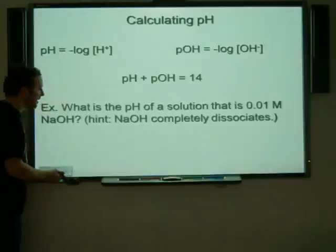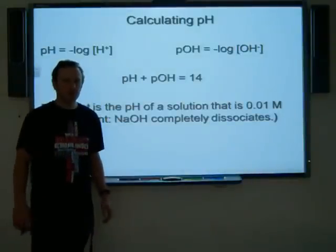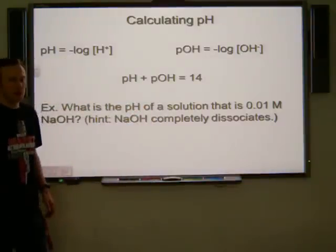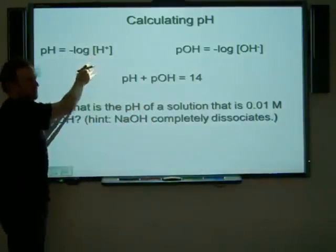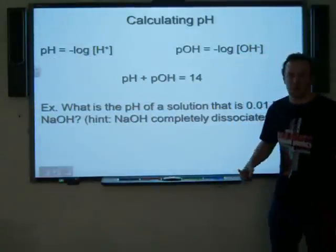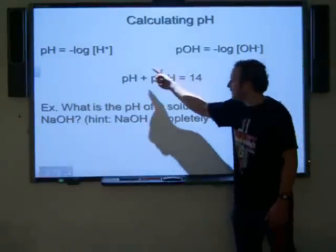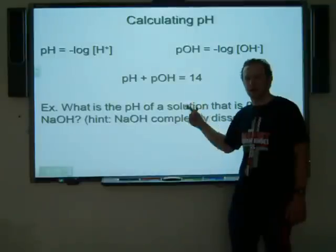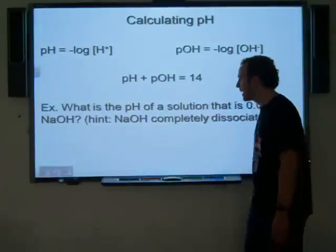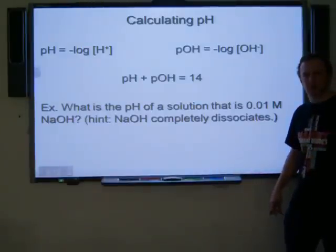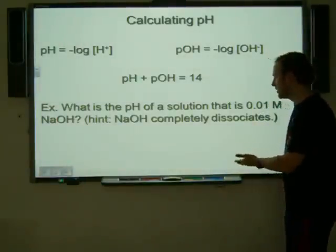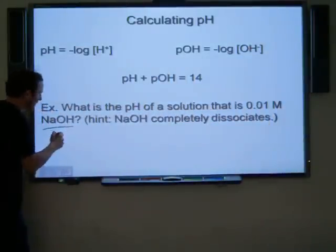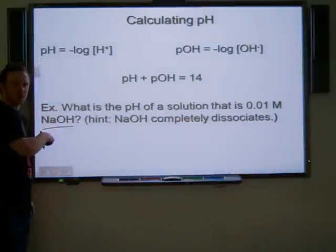I think we're finally ready for pH. pH is pretty straightforward as long as you understand these three relationships here. First I have my pH, I have my pOH, and then I have a relationship that connects both of them together. This one I think you guessed is going to deal with acids because it's dealing with the concentration of hydrogen. pOH is going to deal with bases because I have my concentration of hydroxide ion. And then I have a relationship right here: pH + pOH = 14. If you're wondering that looks awfully familiar, it does relate right back to our Kw value, our ion product constant for water.